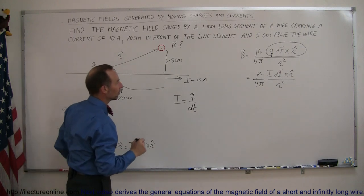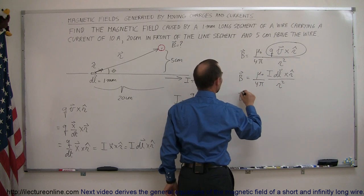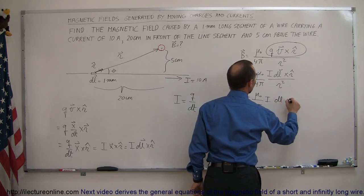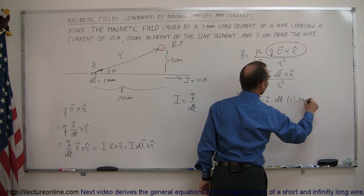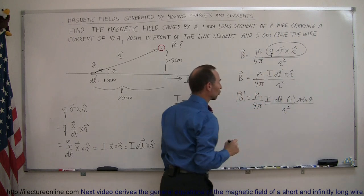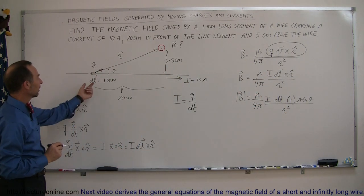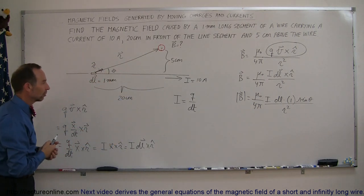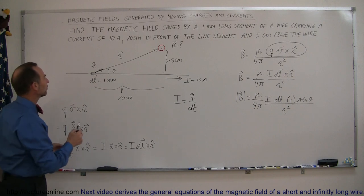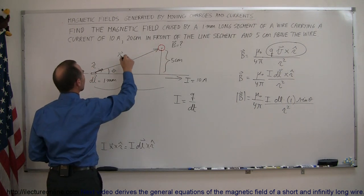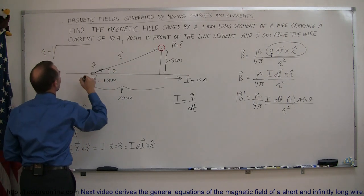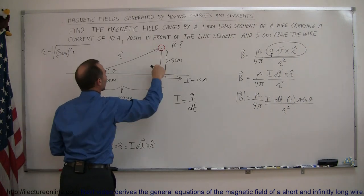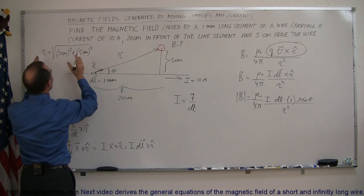We need to find theta. The magnitude of B equals mu-naught over 4π, times the current, times the length DL, times the magnitude of the unit vector r̂ (which is 1), times sine of theta, all divided by r squared. Since this forms a right triangle — with sides 20 centimeters and 5 centimeters — we can use the Pythagorean theorem. r equals the square root of 20² plus 5², and squaring r removes the radical.